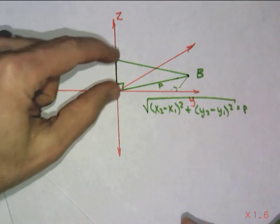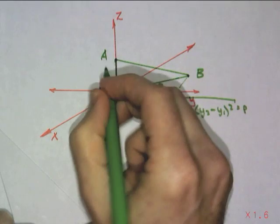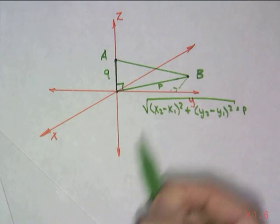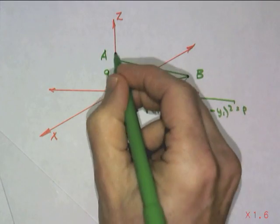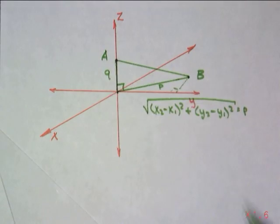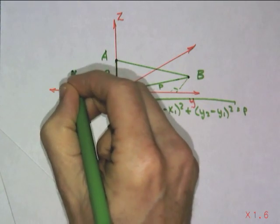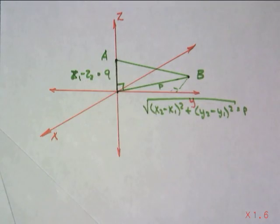This distance is straight up, and I'm going from the origin, so we'll call that Q. Q is going to be the change in z — so Q is nothing more than z2 minus z1. In a 3D coordinate plane, you have an x, a y, and a z. So point A has coordinates x1, y1, z1, and point B has coordinates x2, y2, z2.